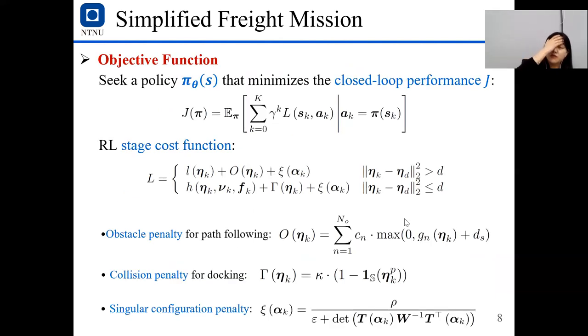So the objective here is to find a policy to minimize this cost function j, where the stage cost function L is defined as a piecewise function. It means that when we are far from the endpoint, we more care about the path following and collision avoidance. And when we are reaching the endpoint, we should focus on the docking and also the collision avoidance in docking.